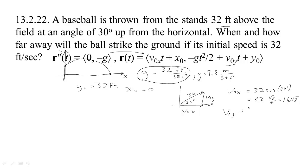V-not-sub-y, similarly, is going to be 32 times the sine of 30 degrees. But the sine of 30 degrees is 1-half, so we have 32 times 1-half, which is 16.